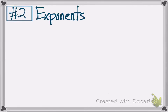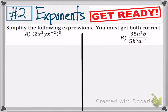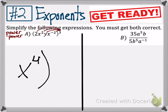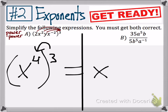Question 2 involves the exponent laws. For Part A, the first thing to realize is that you have a 3 on the outside of the parentheses. The easiest way to handle that is the power-power rule: whenever you have a variable raised to a power that is itself raised to another power — for example x to the 4th being raised to the 3rd power — you simply multiply the exponents together.